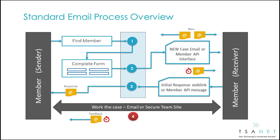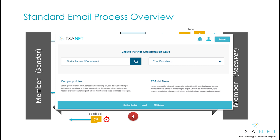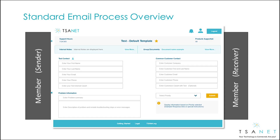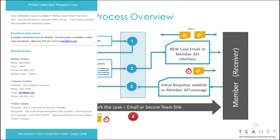Let's take a look at the end-to-end process to better understand how TSAnet Connect works. First, the sender logs into TSAnet Connect and finds a partner. They fill out their process form, select a priority, and hit Submit. Then the email process completes the connection — the sender gets an email that includes SLA and escalation instructions to use if needed.